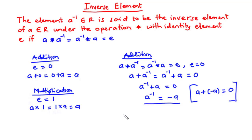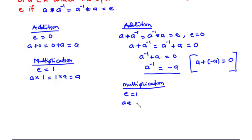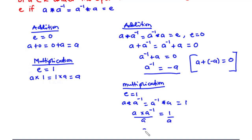Now let's do the same for multiplication. The identity element is one, so e equals one. Using the binary operation definition, a star a-inverse equals a-inverse star a equals one. So a times a-inverse equals one. Dividing through by a, a-inverse equals one over a. Therefore under multiplication the inverse element is one over a, so that a times one over a equals one.